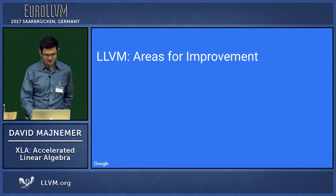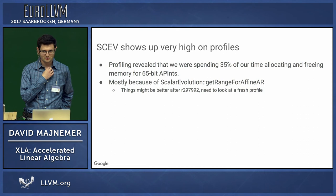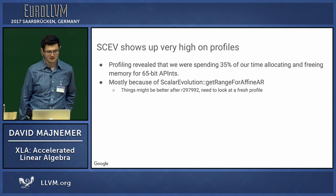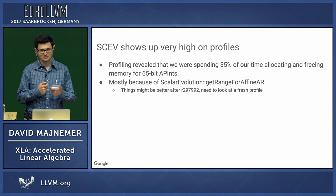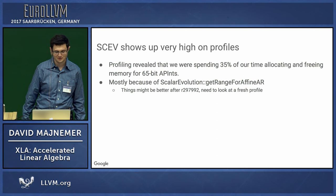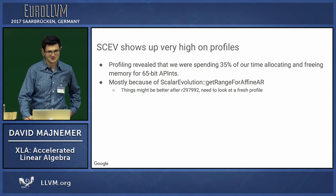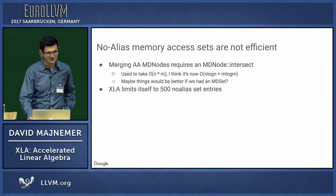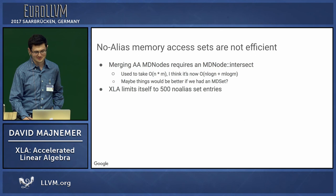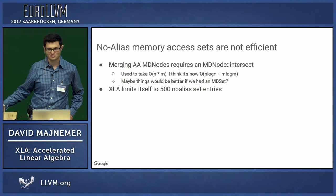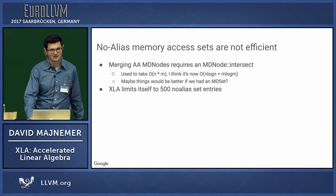LLVM has been great for us, but there are some areas for improvement. We spent about 35% of our time allocating and deallocating memory for 65-bit APInts because SCEV does a bit-width-plus-one approach to check for overflow — though this may have been fixed recently. Our alias analysis representation in IR isn't ideal either: it used to be O(N²) to update alias analysis information, which I got down to O(N log N + M log M), but we really need a proper set representation in the IR rather than representing sets as lists. We also have to limit how much alias information we send into LLVM to keep compile times reasonable.